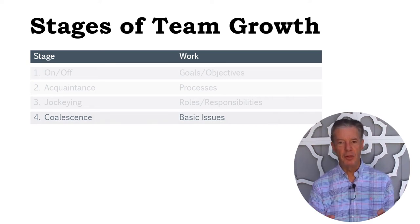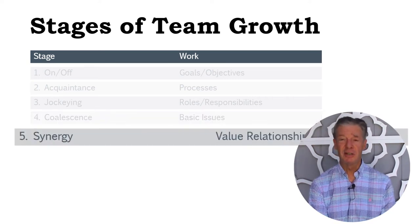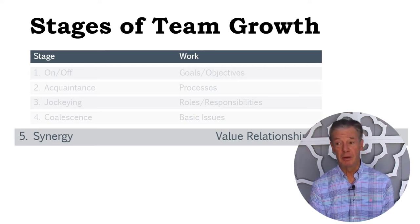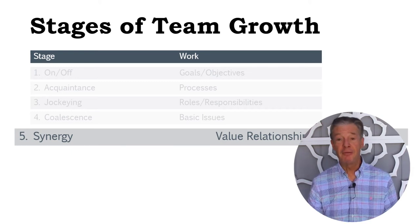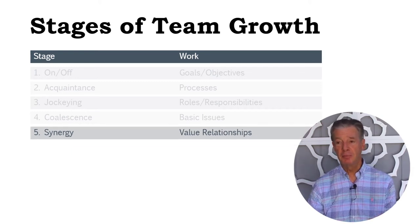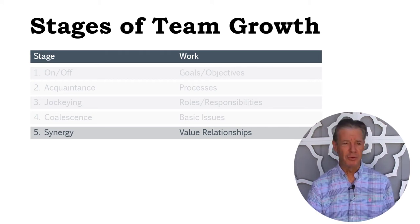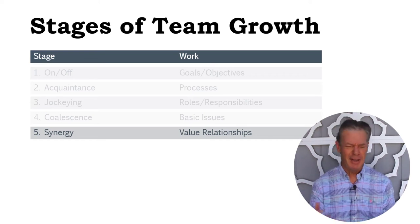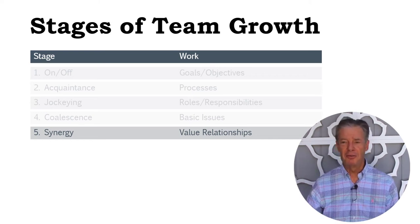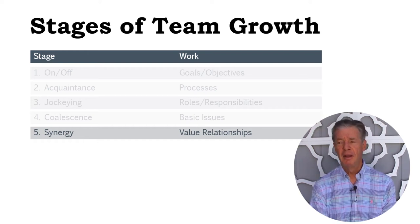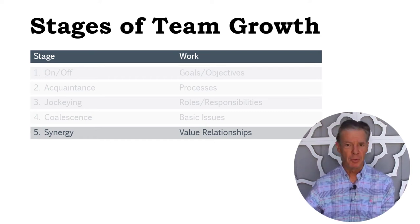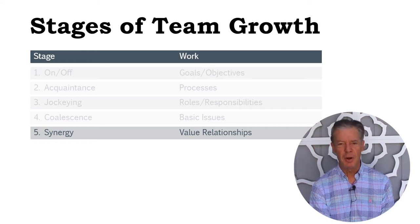Finally, the fifth stage of team growth is synergy — where one plus one equals three or five, it's ever-expanding. What goes on then is simply valuing the relationships themselves. If you've seen championship teams — Super Bowl, World Series, World Cup — everybody's drowning in champagne afterwards, saying I love you, man, and they really do love one another. You'll often see that they sometimes go into business together when the playing days are over — open a restaurant, a car dealership — because they really do value the relationships and hanging out together.